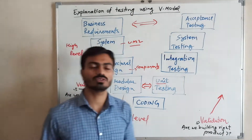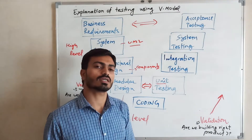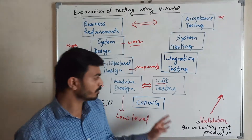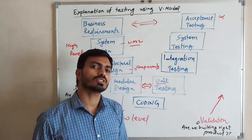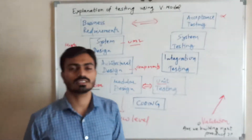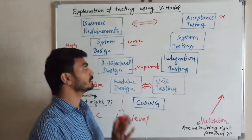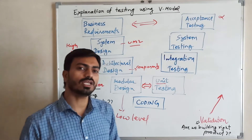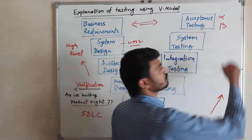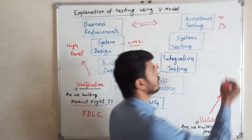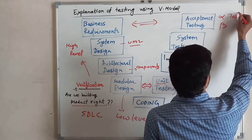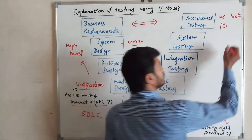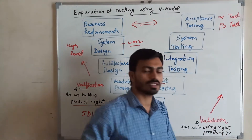In acceptance testing, we check if business requirements are satisfied. Alpha testing is done by the server development team to check business requirements. After that, the product is released to end users for beta testing. Once beta testing is successful, it is released.